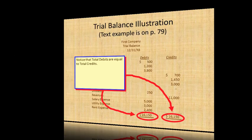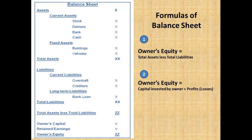First, balance sheets. On the balance sheet, we have assets and liabilities. Assets include current assets and fixed assets. Liabilities include short-term liabilities, current liabilities, and long-term liabilities. Then we have owner equity.